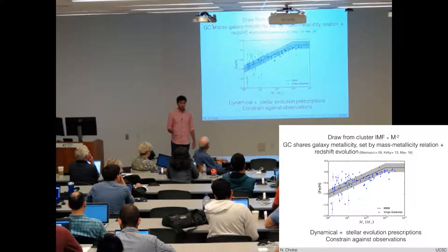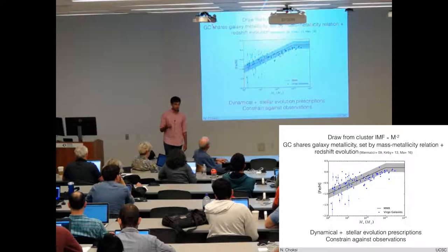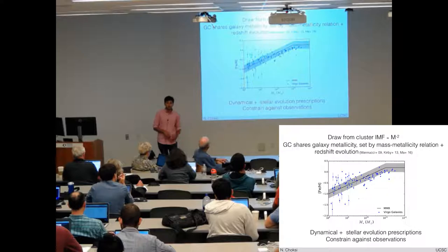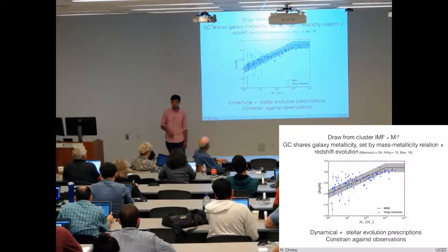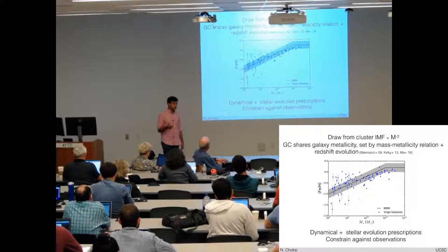Once we have a total mass to form in globulars, we just draw clusters from a cluster IMF, just M to the minus two. This is well-motivated both in Hwei simulations and in the local universe, in the local young massive clusters. The metallicity of each cluster just comes from a galaxy stellar mass metallicity relation. It's set by the metallicity of the host galaxy with some additional scatter, and also redshift evolution. This relation is an empirical relation.